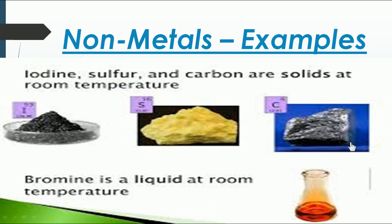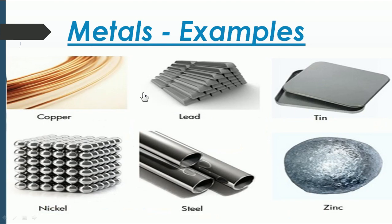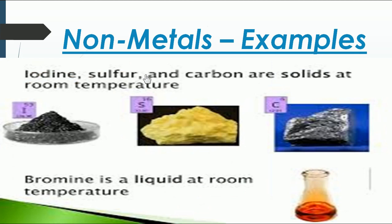Non-metals: some examples we come across are carbon, sulfur, iodine, and bromine. Bromine is one of the non-metals available in liquid form. Iodine is easily vaporizable and is violet in color. Sulfur is yellow in color. Carbon is a very familiar element — it makes up the whole living organism and is a very interesting element that gives us life. One metal exists in liquid state — that is mercury, which we use in thermometers because it expands uniformly when heated.